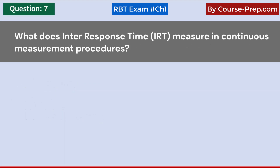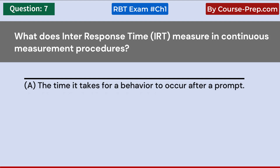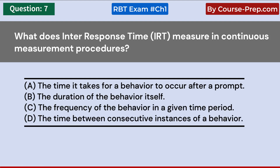What does inter-response time (IRT) measure in continuous measurement procedures? A. The time it takes for a behavior to occur after a prompt. B. The duration of the behavior itself. C. The frequency of the behavior in a given time period. D. The time between consecutive instances of a behavior. Answer D: The time between consecutive instances of a behavior.